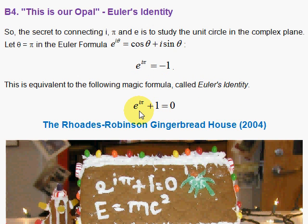which has those five numbers we talked about earlier, the additive identity, the multiplicative identity, pi, i, and e, and what's even more striking is that each is used once and only once in this formula.